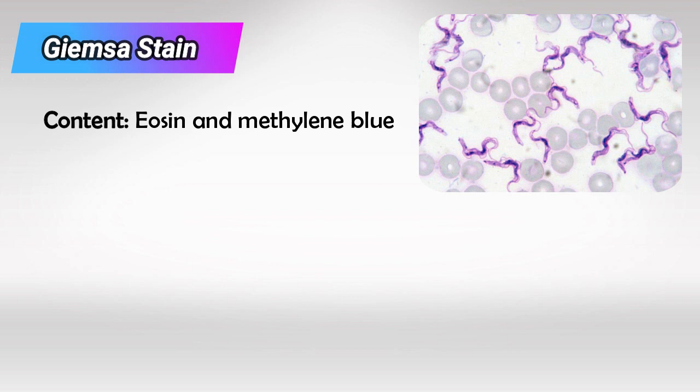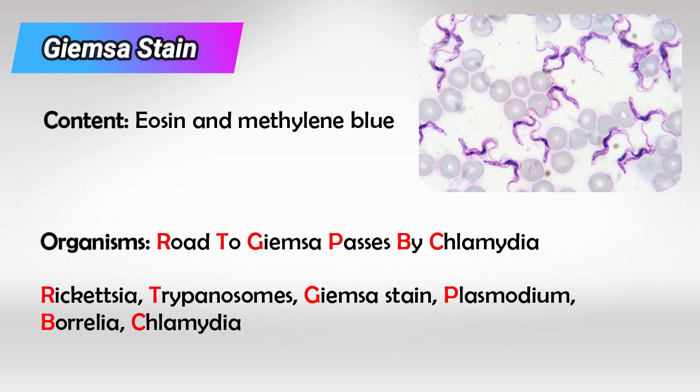First we have Giemsa stain, which is basically eosin and methylene blue. To remember the organisms that can be stained with Giemsa stain, remember: the road to Giemsa passes by Chlamydia. So: Rickettsia, Trypanosomes, Plasmodium, Borrelia, and Chlamydia.